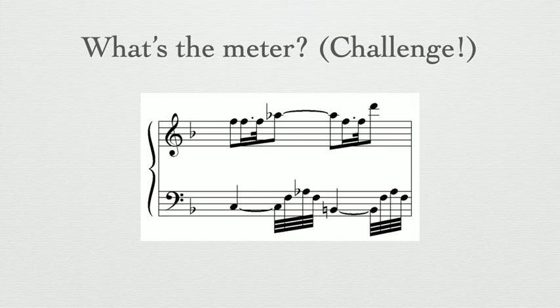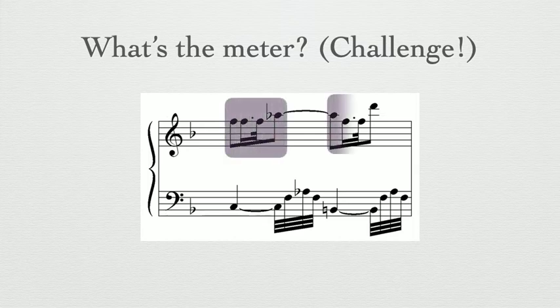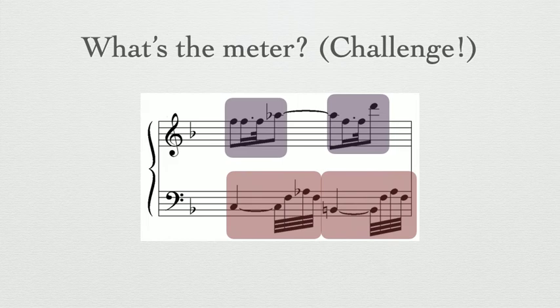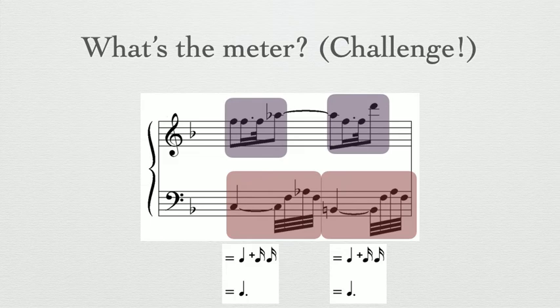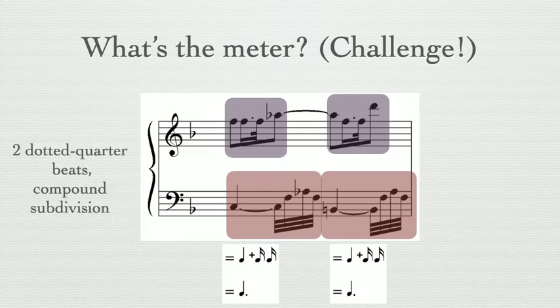Now it's time to challenge yourself. What's the meter? Pause now and take your time. You could have found these 2 beamed groups in the treble clef separated by a tie. Or, you could have found these 2 groups in the bass line connected by a tie, each equaling 1 dotted quarter note in duration. Ties — 2 ways! With 2 dotted quarter beats in compound subdivision, you should have gotten 6/8 meter.